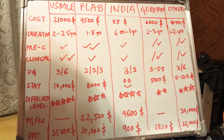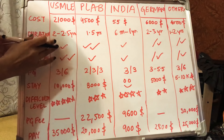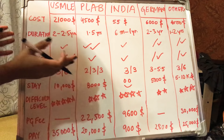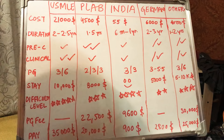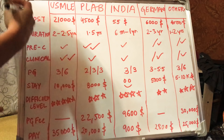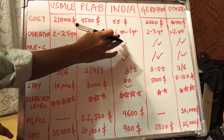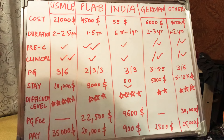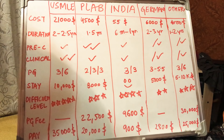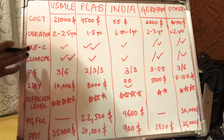For duration, this varies by individual, but from my point of view USMLE takes about 2 to 2.5 years — from when you fill your first application for Step 1 or Step 2 to your first day of residency. PLAB is about 1.5 years. For Indian PG, six months to one year to prepare. Germany takes two to three years because you have to prepare for the German language, which has several levels of testing. For other countries, it's one to two years, similar to PLAB and USMLE.